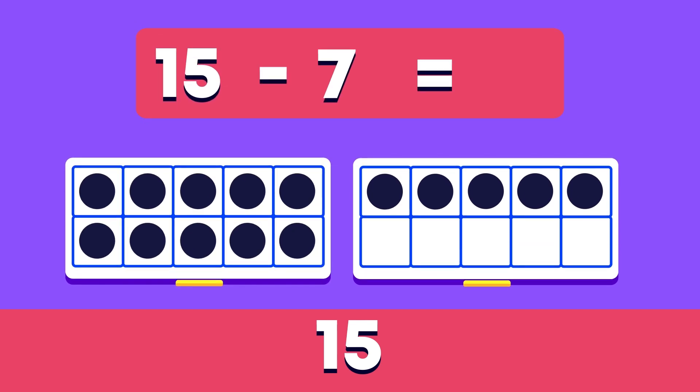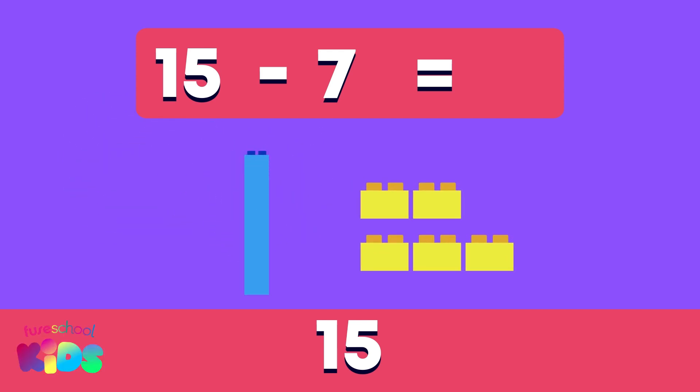We started with 15 so we built 15 like this. We need to take away 7. We start by taking away from the tens frame that is not complete, like this.